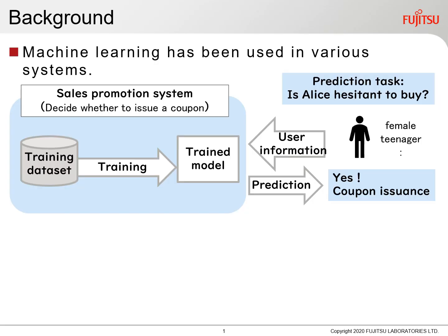With the spread of machine learning, use cases of using personal data for training data are increasing. Machine learning lets the machine learn from data, making it possible to make predictions for unknown data. For example, in a sales promotion system on a shopping site, we would like to issue discount coupons to hesitating buyers. However, it is difficult to predict this. Therefore, we use machine learning to model patterns of hesitating buyers from behavior data on the site, and then we can predict it using the trained models.